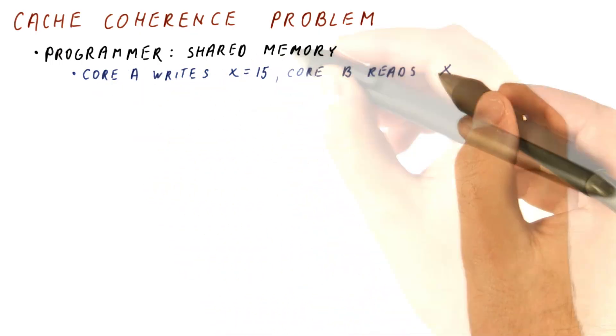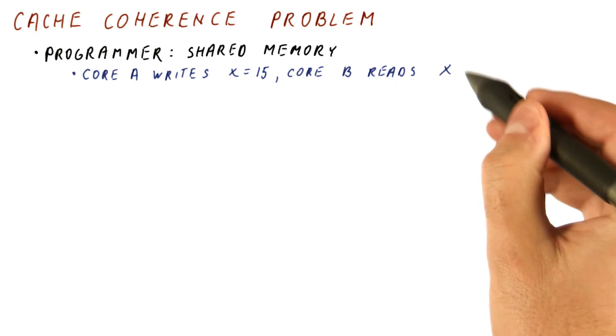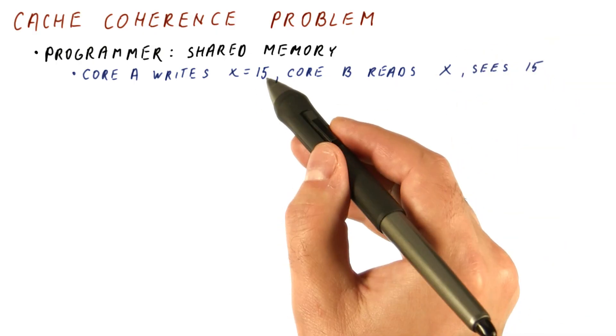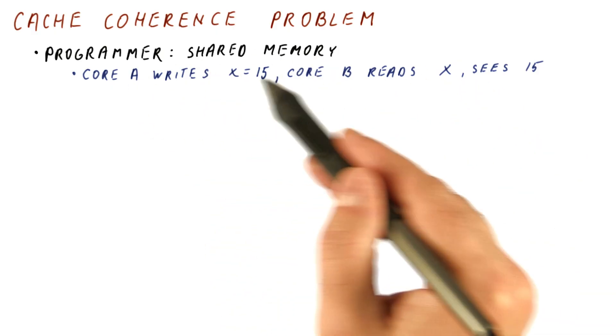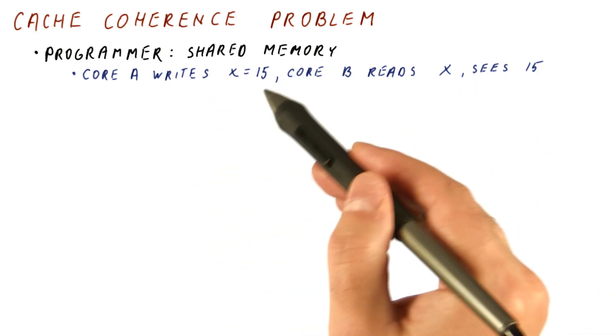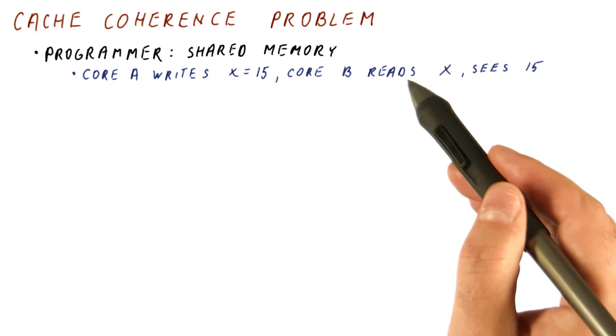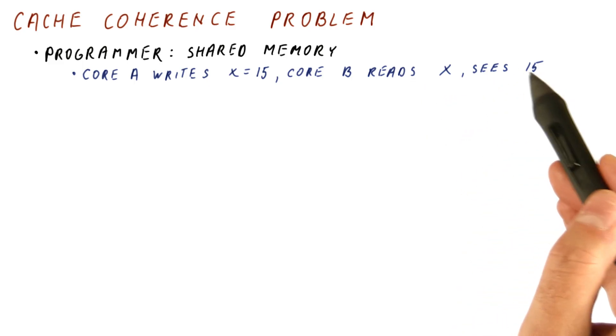and then another core reads that variable, it will read what the last write put there. This is how the cores communicate through shared memory. One writes something to a shared memory address, another one reads it and expects to see the data that was written there.